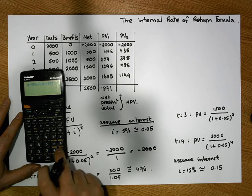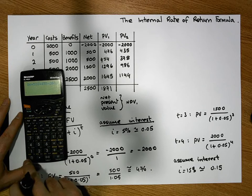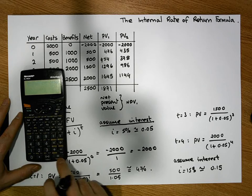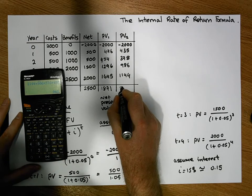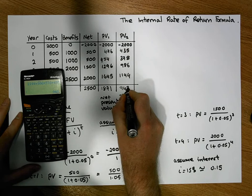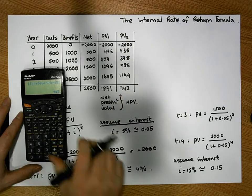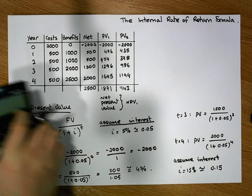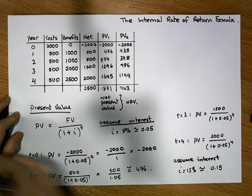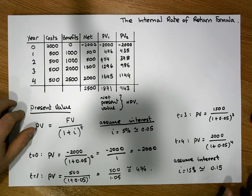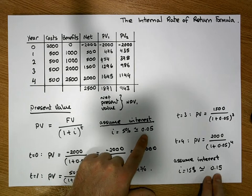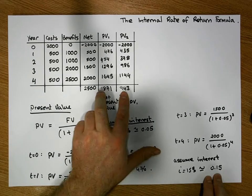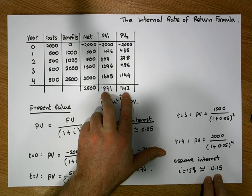At 5 minus 2,000 euros, we'd expect the project to make 943 euros. What we can really see here is that, depending on the interest rate, the true position with respect to the net present value can change considerably.